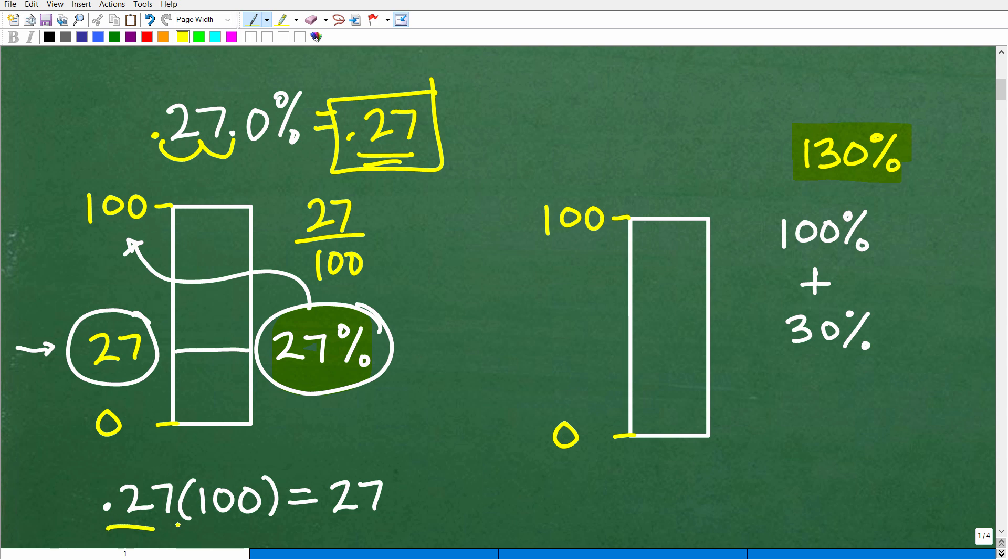So what you're going to do is you're going to take the decimal version of the percent. In this case, it's 0.27, and you multiply by the whole. So here we're trying to find 27% of this whole 100. So 0.27 times 100 is 27. Now, that's pretty redundant, but let's just make sure we understand kind of the big picture of what's going on with percent.